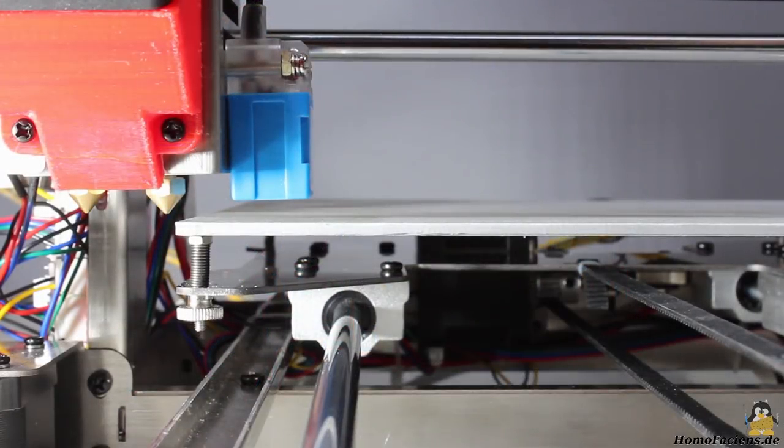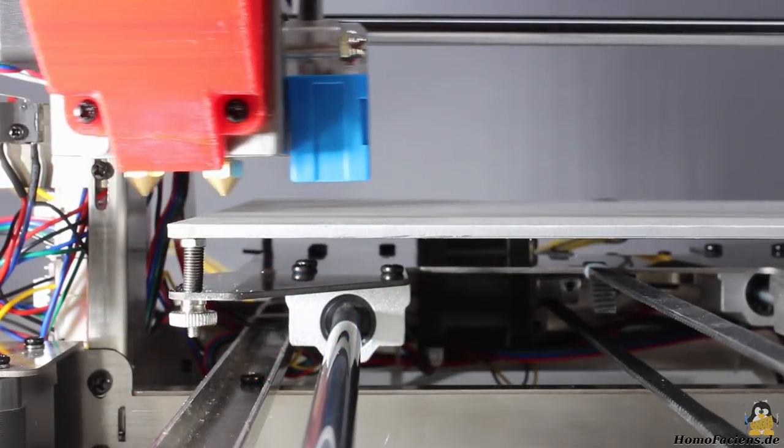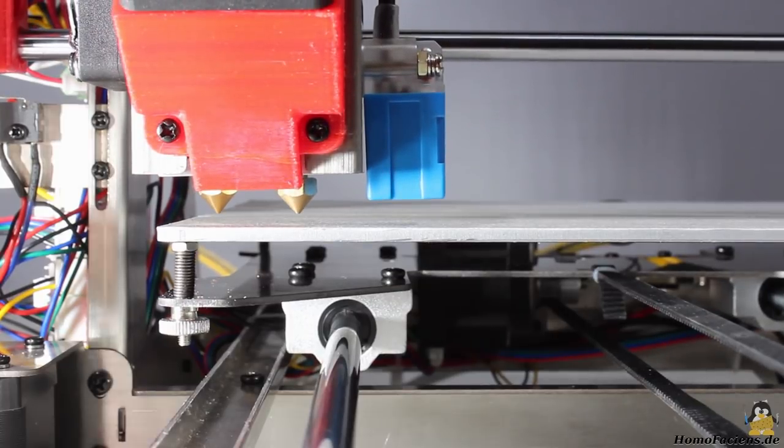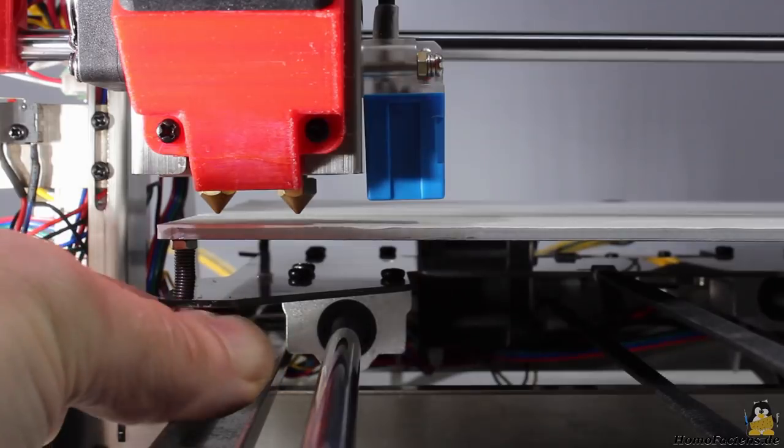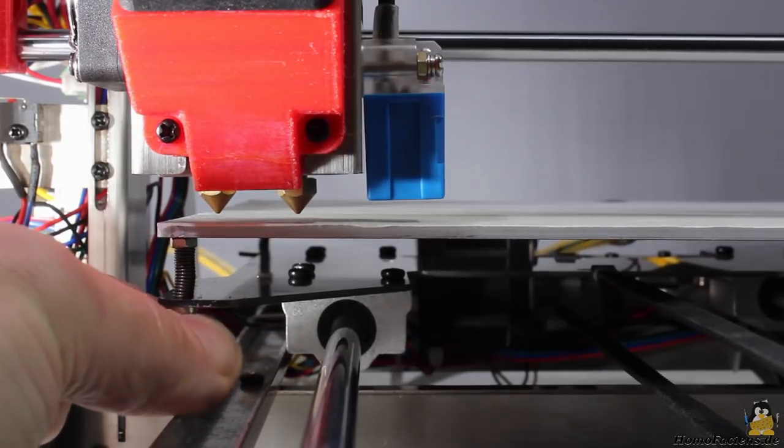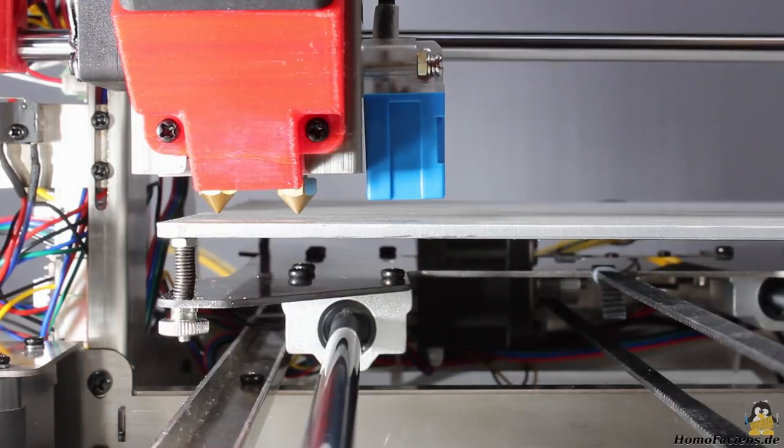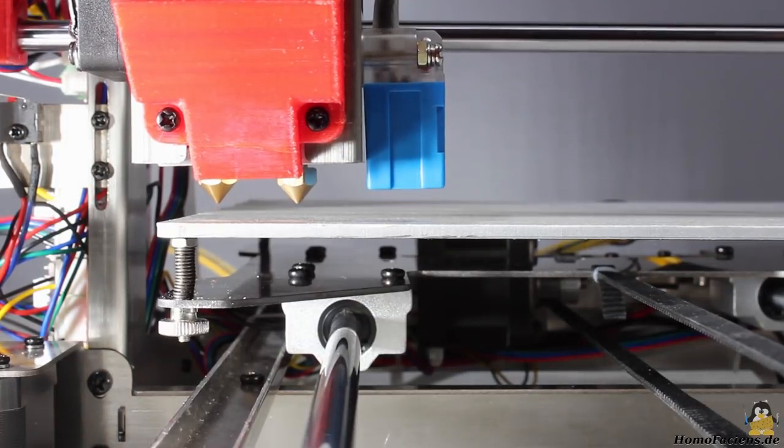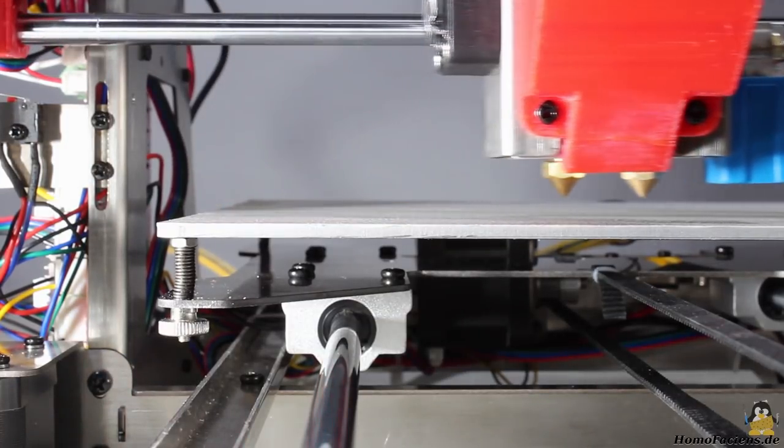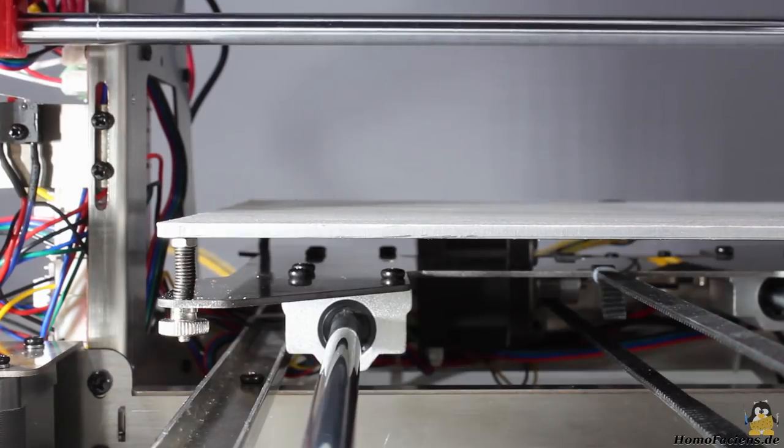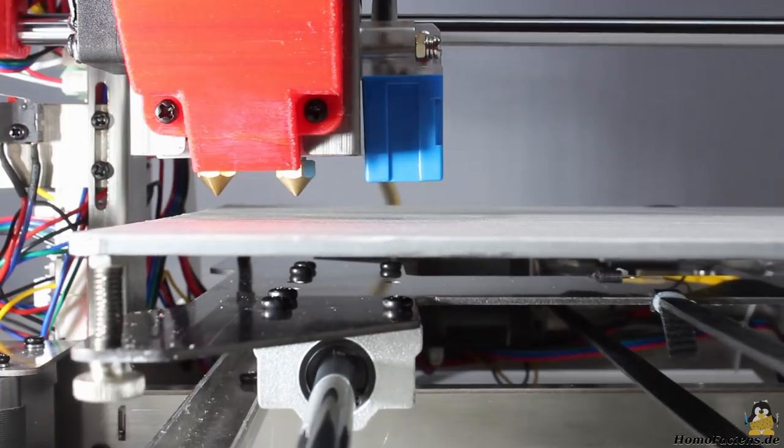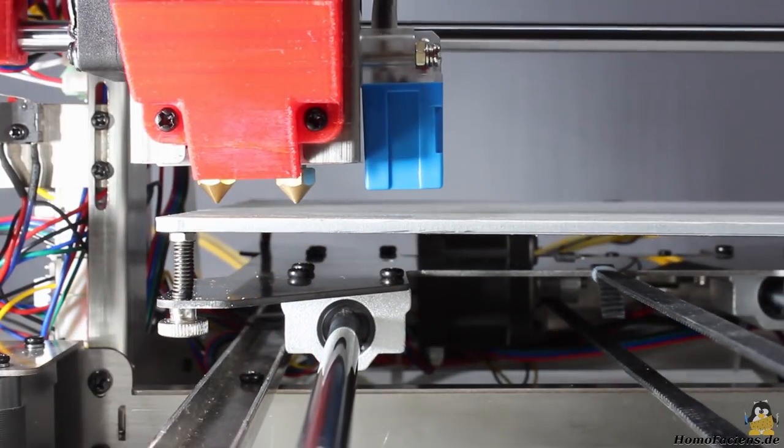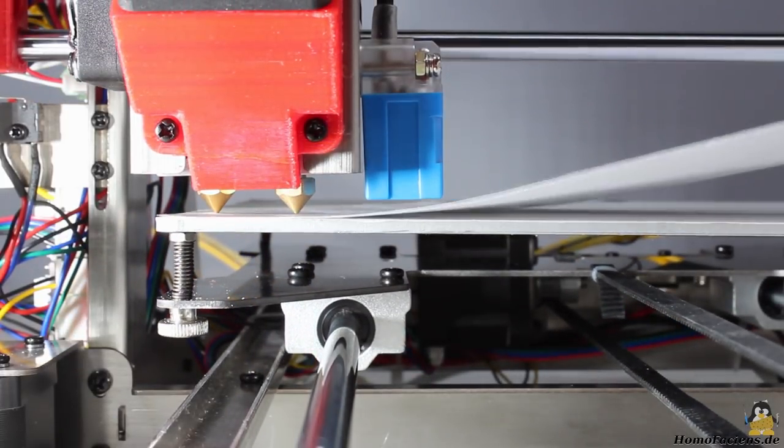Leveling the print bed is the next step. With the menu you can drive the print head to the corner points of the build plate. Now lift that corner point until a gap of 1 to 2mm is left between print bed and tip of the nozzles. Repeat that procedure on all corner points and lift the print bed step by step, until nothing but a sheet of paper fits tightly between nozzle and print bed.